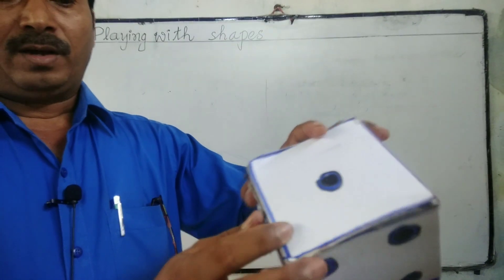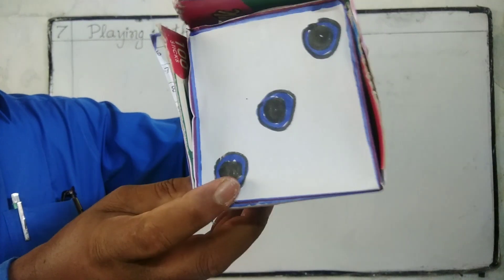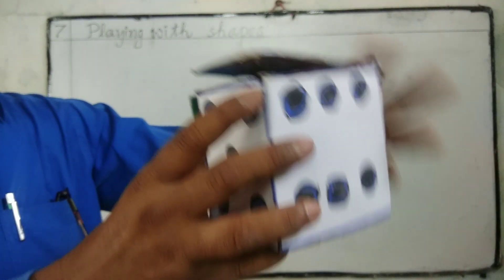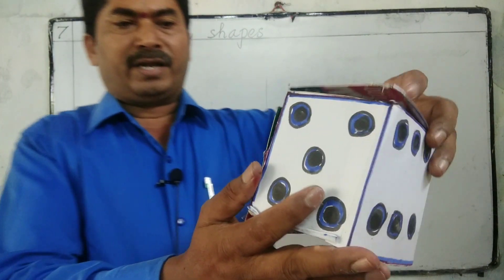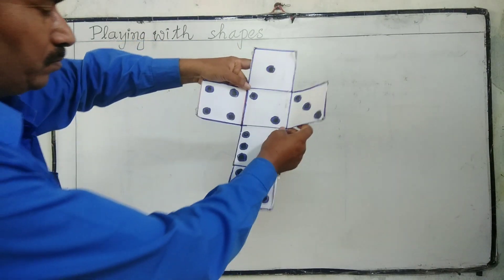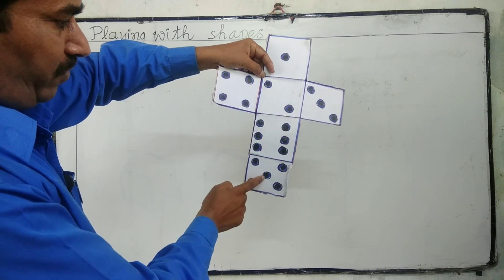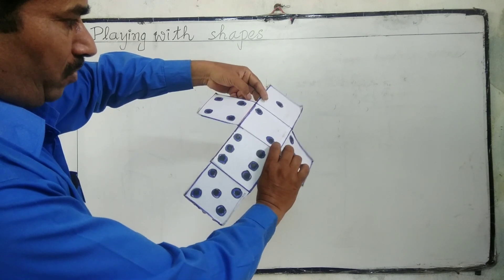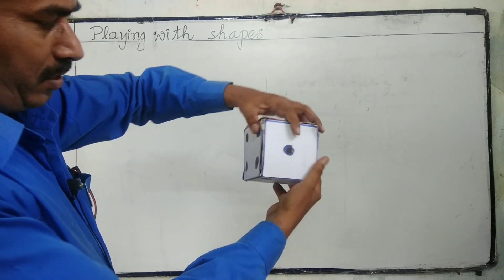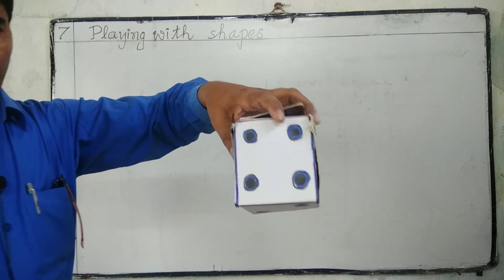This is also like a dice — one, two, three, four, five, six. If we open it, it will become like a net. If we fold the net back, it will become a dice again.